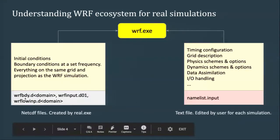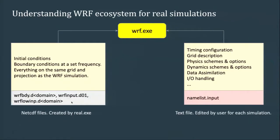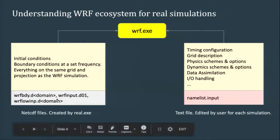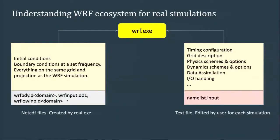These NetCDF files are always named wrfbdy.d-something, wrfinput.d-something, and wrflowrnp.d-something. If you do data assimilation there's also wrffdda.d. There is no date in the file name and you can't add one. So if you need several files for your boundary conditions, you need to manually handle the changing file in your script because WRF won't do that for you.